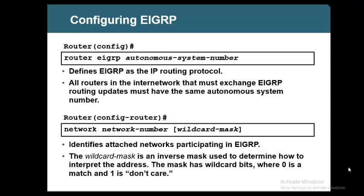Only routers within this group can form neighbors, share routes, and learn routes. Any destination outside the EIGRP group — outside the EIGRP autonomous system — will not be learned, because it belongs to another autonomous system.